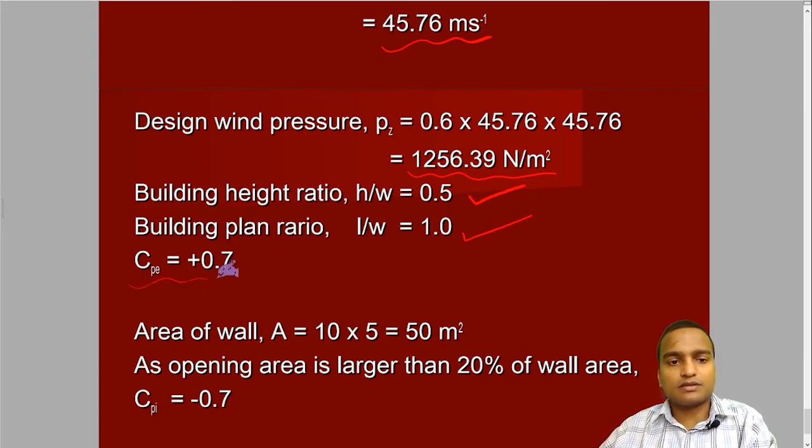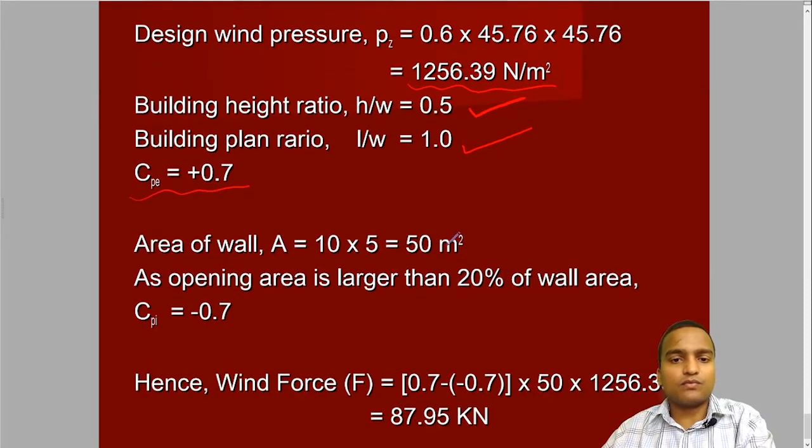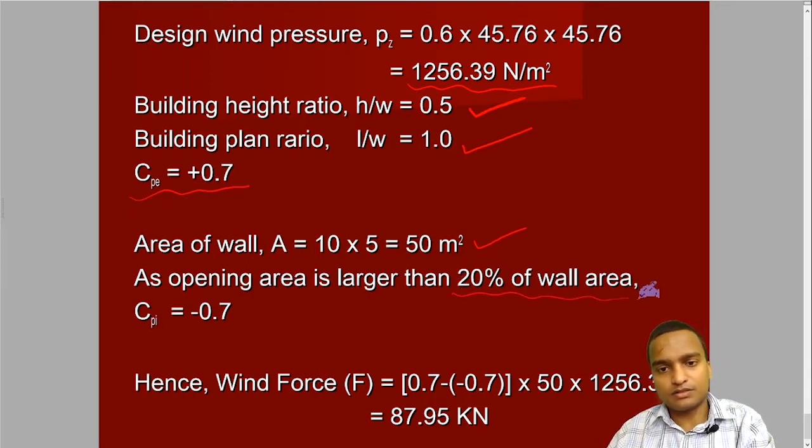Depending on that, external pressure coefficient will be 0.7. Area of wall is 50 meter square. Whereas area of opening of the door, which was calculated, it was larger than 20% of wall area. Then Cpi will be also 0.7 with the minus sign. So this calculation do not worry. This will be given in most of the cases because for this, we have to refer one more table.